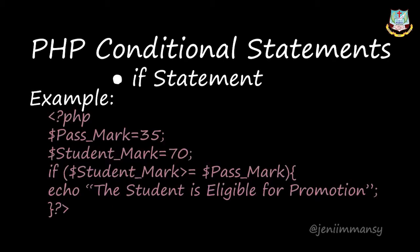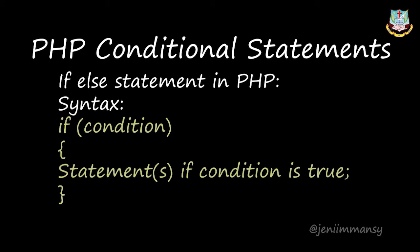In this example, pass mark is equal to 35 and the student mark is 70. If the student mark is greater than or equal to pass mark, the output 'the student is eligible for the promotion' will be displayed using echo. In PHP, the echo statement is used to get the output — whatever is inside the double quotes will be displayed on the output page. If the condition is true, the output will be displayed.